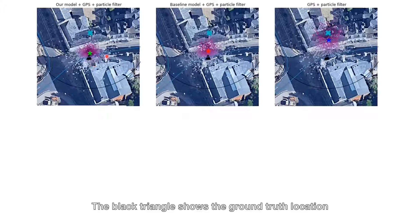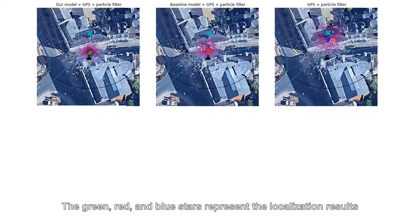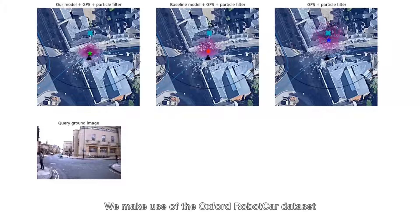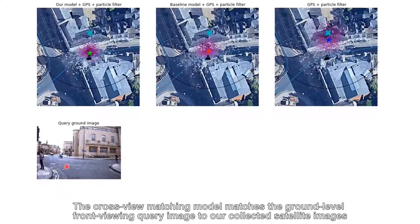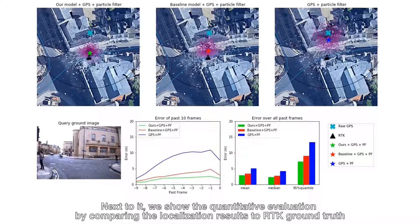The black triangle shows the ground truth location. The sign cross indicates the GPS positioning. The green, red, and blue stars represent the localization results. We make use of the Oxford RoboCar dataset. The cross-view matching model matches the ground-level front-facing query image to georeferenced satellite images. Next to it, we show the quantitative evaluation by comparing the localization results to RTK ground truth.